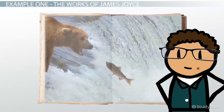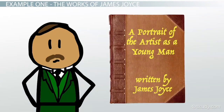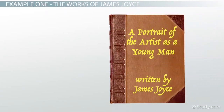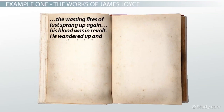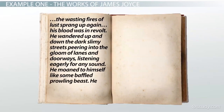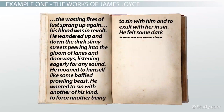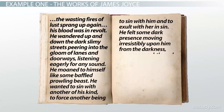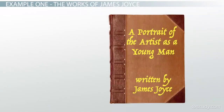In a second example we see the young hero of Joyce's novel A Portrait of the Artist as a Young Man wandering the streets of Dublin's red light district in a state of lusty confusion: "The wasting fires of lust sprang up again. His blood was in revolt. He wandered up and down the dark slimy streets peering into the gloom of lanes and doorways, listening eagerly for any sound. He moaned to himself like some baffled prowling beast. He wanted to sin with another of his kind, to force another being to sin with him and to exult with her in sin. He felt some dark presence moving irresistibly upon him from the darkness, a presence subtle and murmurous as a flood, filling him wholly with itself."